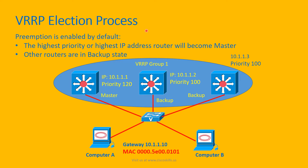VRRP election process. In VRRP, preemption is enabled by default. Therefore, the router with the highest priority will become master. If priorities are equal, the router with the highest IP address will become master. All other routers are in backup state. In this example, we have VRRP group number 1, so its virtual MAC address is determined accordingly.